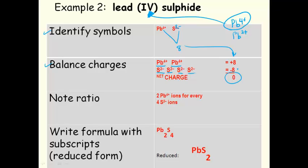Let's note the ratio. For every 2 lead ions, there are 4 sulfide ions. We use this ratio to write the formula Pb2S4. But this isn't in lowest terms, and with ionic formulas, we put them into lowest terms. We have to reduce them. So if we divide 2 by 2 and divide 4 by 2, we end up with Pb1S2.